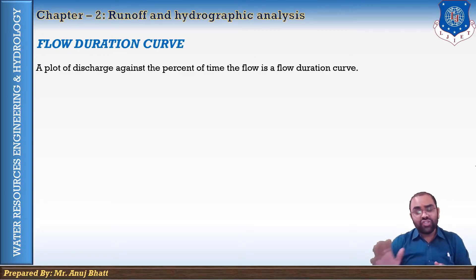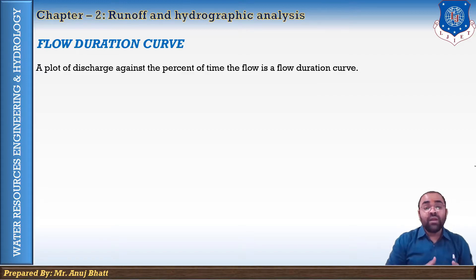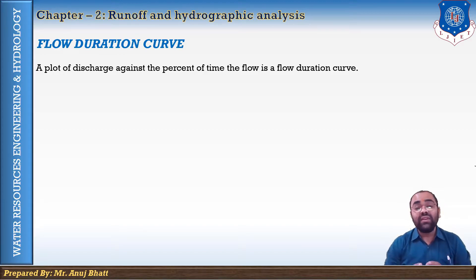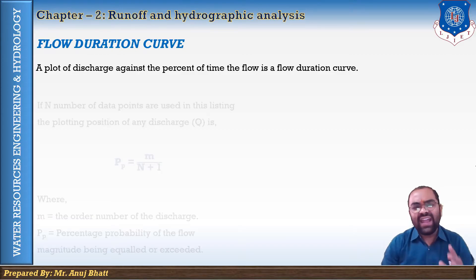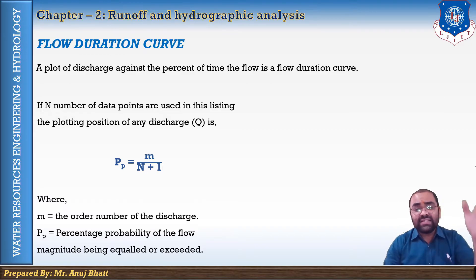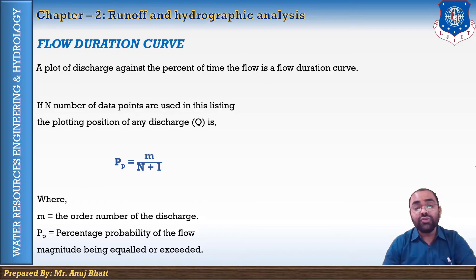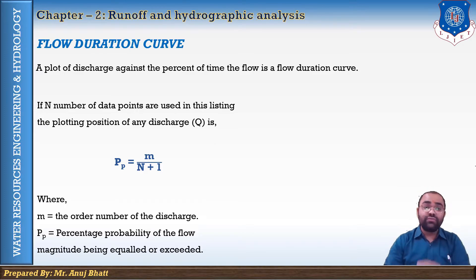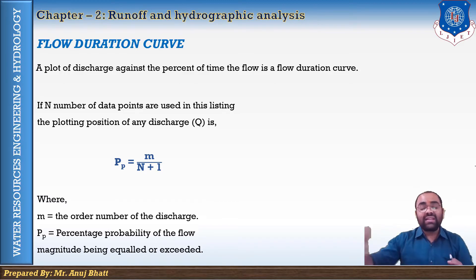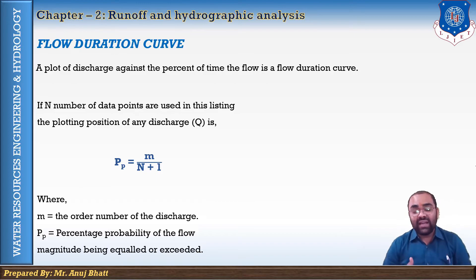To plot the flow duration curve, the stream flow data is arranged in descending order of discharge using class intervals. If the number of individual values is very large, the data can be on a daily, weekly, ten-daily, or monthly basis. If N number of data are used, the percentage probability of any flow magnitude Q is m divided by (N plus 1), where N is the number of data points and m is the order number of the discharge.